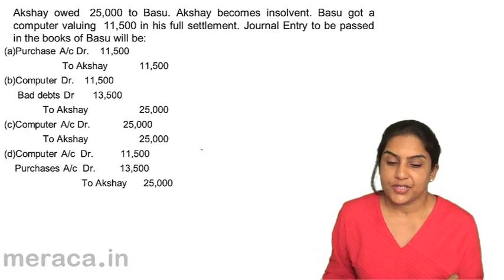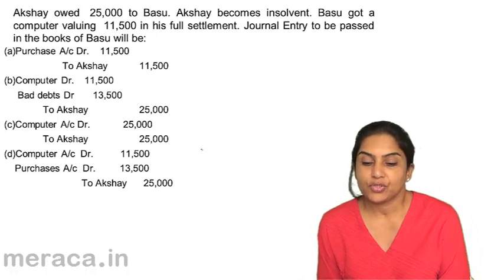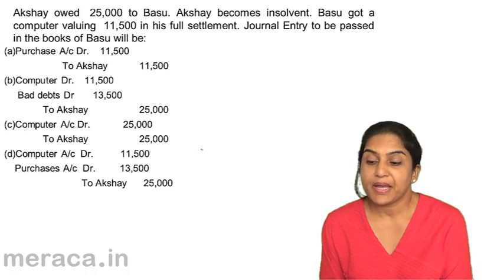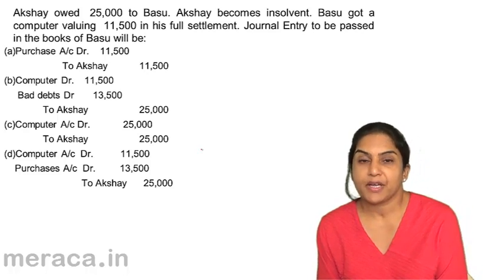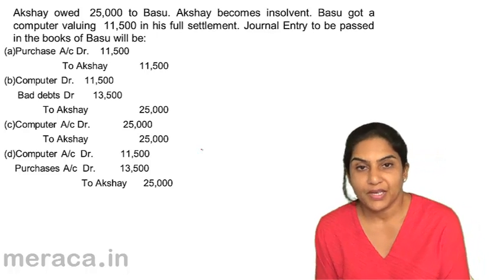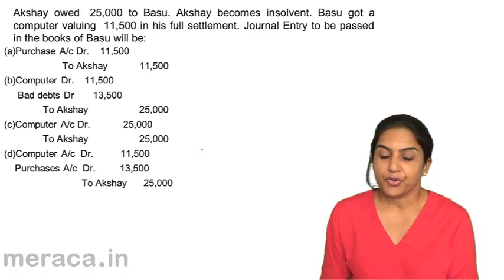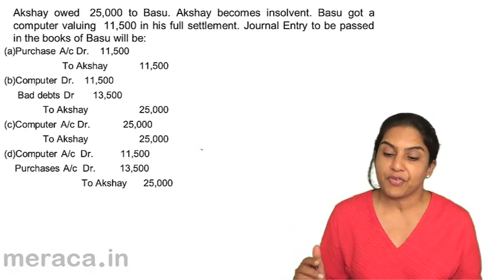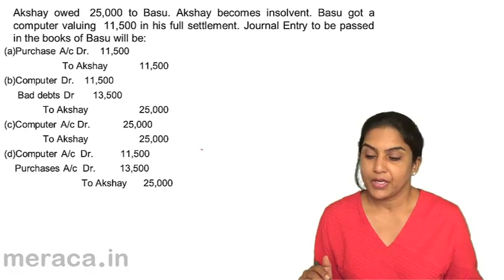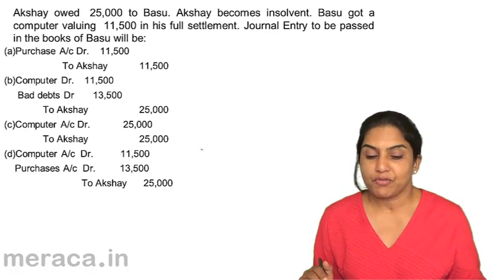Another transaction. Akshay owed 25,000 to Basu. Akshay becomes insolvent, meaning he is not in a position to meet his liabilities. Basu got a computer valuing 11,500 in full settlement. We need to pass the journal entry in the books of Basu.